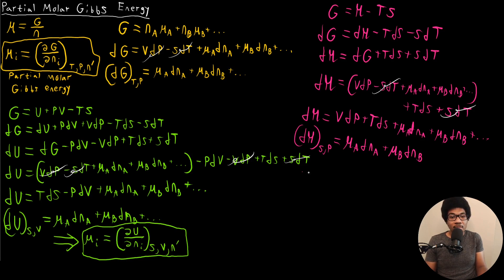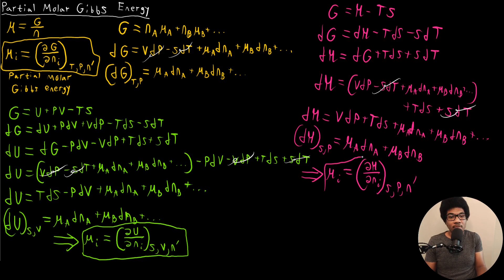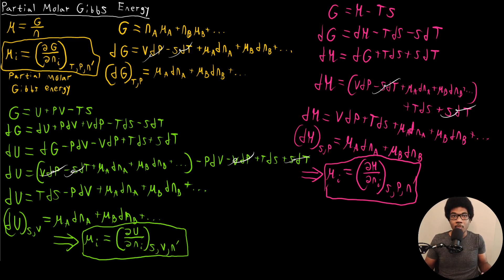This implies that we can write the chemical potential of any component as the partial derivative of enthalpy with respect to the changing number of moles of that component, at constant entropy, pressure, and number of moles of all other components. So that gives us another expression for the chemical potential.